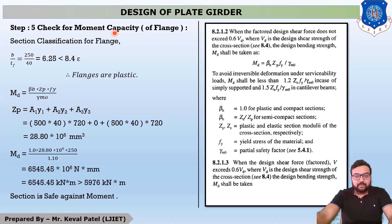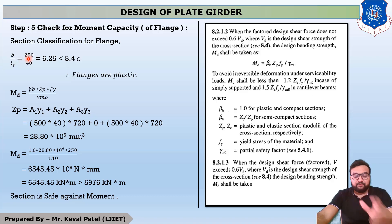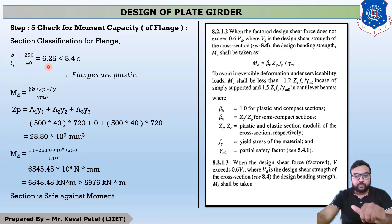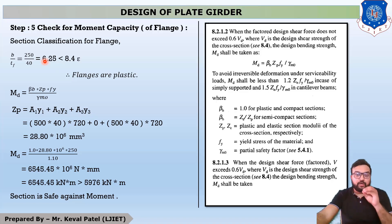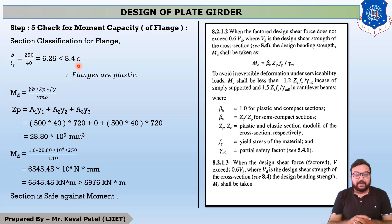Move to page number 18 of IS 800-2007, where section classifications are provided. The equation is B/Tf, where B is taken as B/2. So B/2 = 250 divided by Tf = 6.25. This value 6.25 is less than 8.4ε, which means our selected section's flange is in the plastic state.